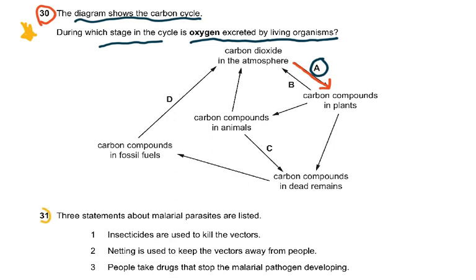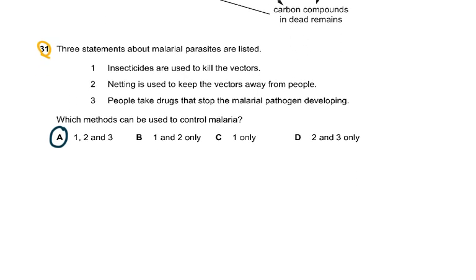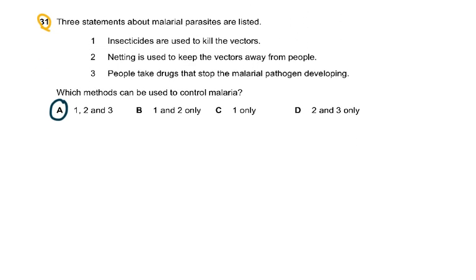Question 31: three statements about the malarial parasite are listed. The malarial parasite is plasmodium and causes malaria — infected people carry plasmodium in their blood inside red blood cells. Statement 1: insecticides are used to kill the vectors. Statement 2: netting is used to keep vectors away from people — the female Anopheles mosquito should not suck your blood if you have malaria, otherwise it can transfer to others. Statement 3: people take drugs that stop the malarial pathogen developing. All three statements were correct — the answer was one, two and three.